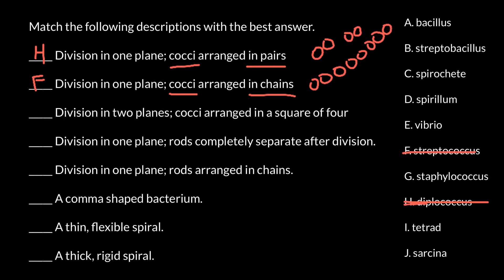Next: division in two planes, cocci arranged in a square of four. It would be round shape arranged as a square of four. The answer would be I: tetrad. Tetra also means four.